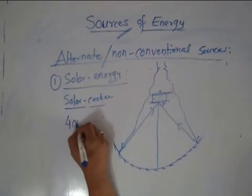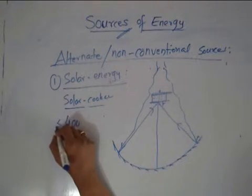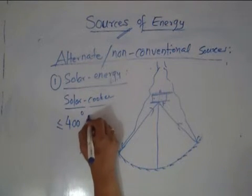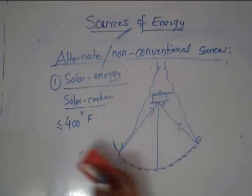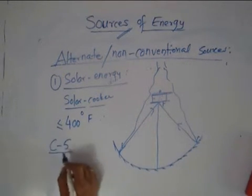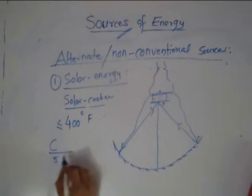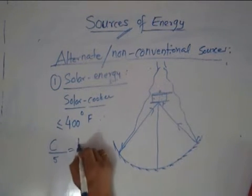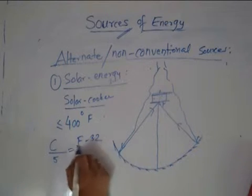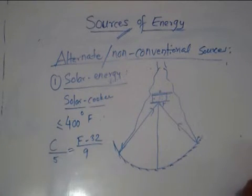Normally, the temperature produced are roughly maximum less than or equal to 400 degrees Fahrenheit. How much of centigrade is that? Let us figure that out. C upon 5 equal to F minus 32 upon 9, alright.